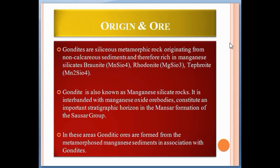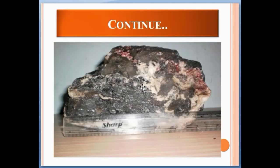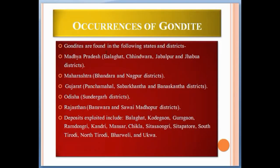In these areas, gonditic ores are formed from the metamorphosed manganese sediments in association with gondite. See here — you can see the mica and quartz; this is the gondite rock, with some quartz veins also visible here.